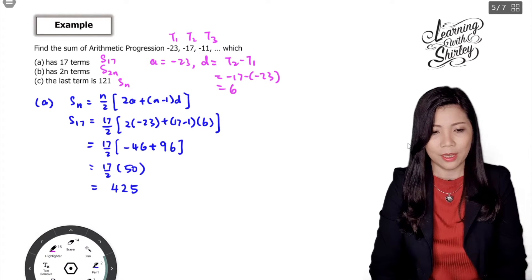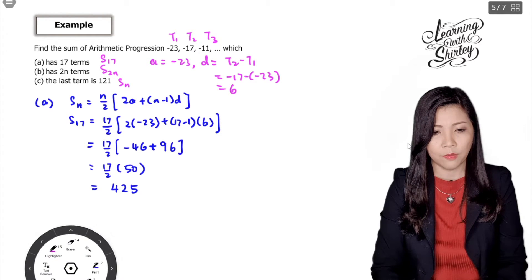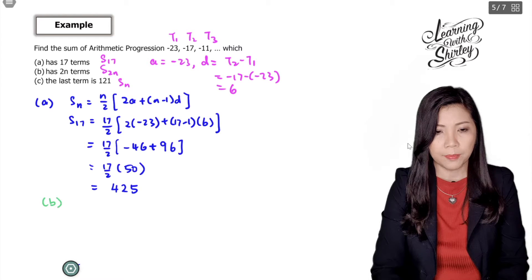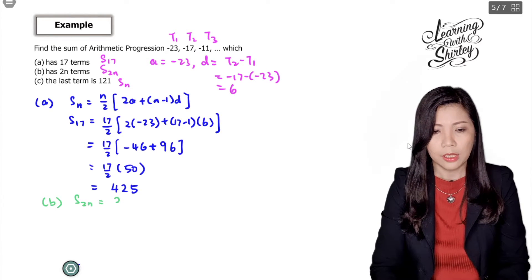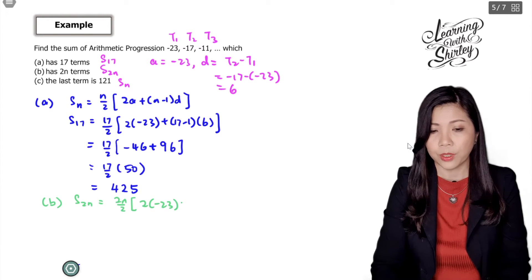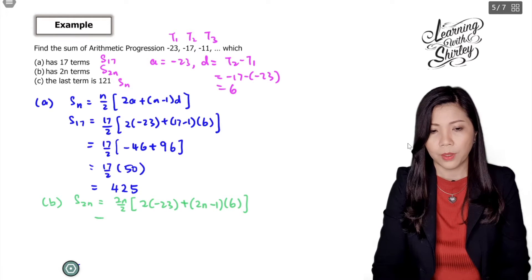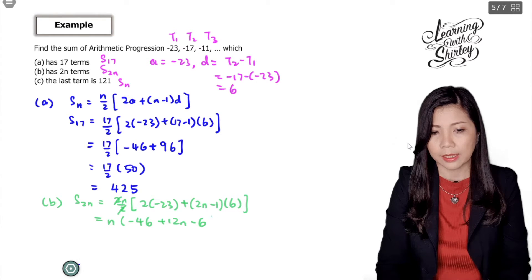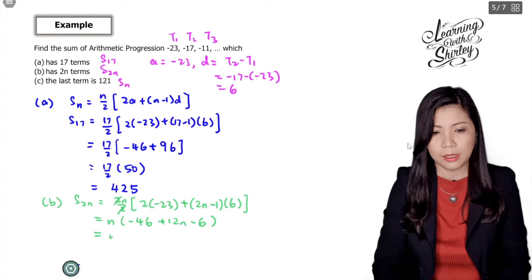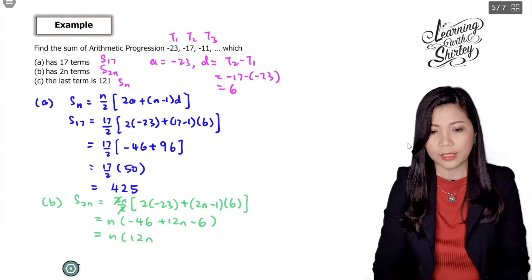For (b), find S2n by substituting 2n into all the n in the formula. So it's 2n over 2 times (2 times negative 23 plus (2n minus 1) times 6). The 2n over 2 simplifies to n. Inside the bracket: negative 46 plus 12n minus 6. Simplifying gives n times (12n minus 52). So that's the answer for (b).